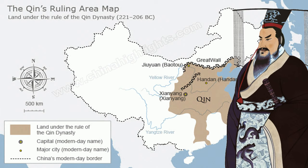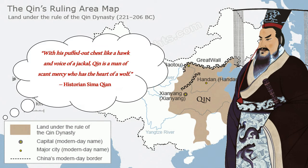So what did Emperor Qin do during his reign? His great power is both celebrated and feared. He was known as an achiever of great accomplishments that still impact China today. However, he was also known as a ruthless and at times cruel leader who would stop at nothing to rule the way that he wanted. Famous Chinese historian Sima Qian wrote about Qin about a hundred years after his death, capturing this celebration and fear by saying: 'With his puffed out chest like a hawk and voice of a jackal, Qin is a man of scant mercy who has the heart of a wolf.'